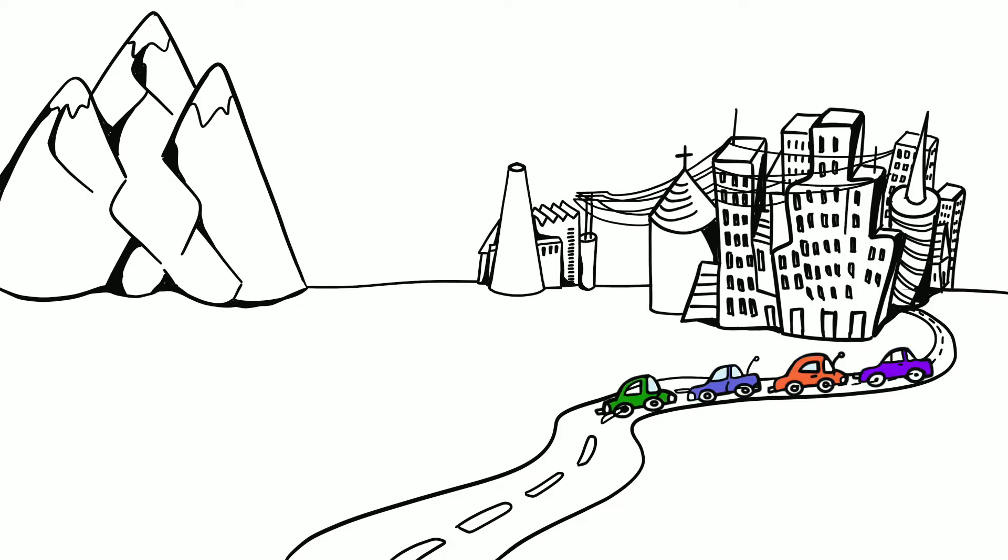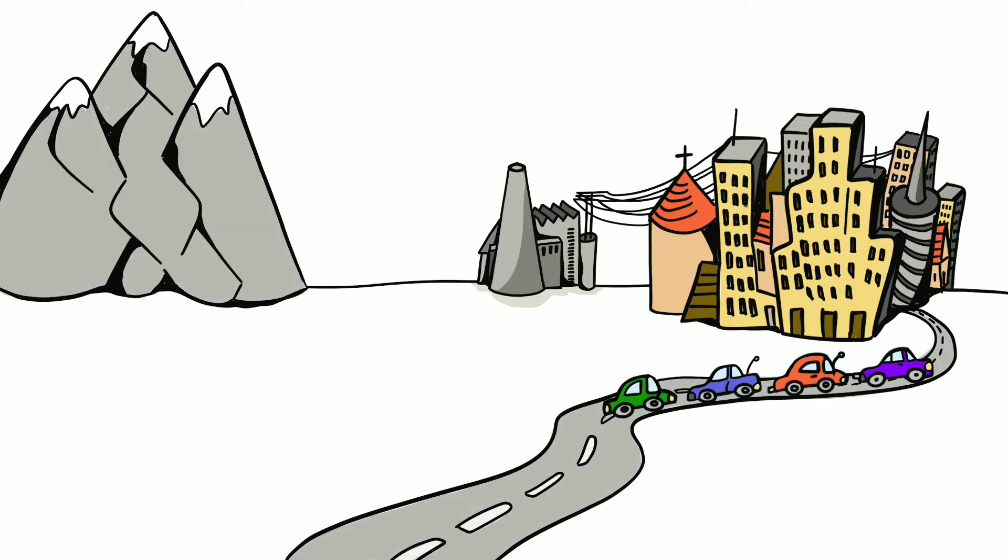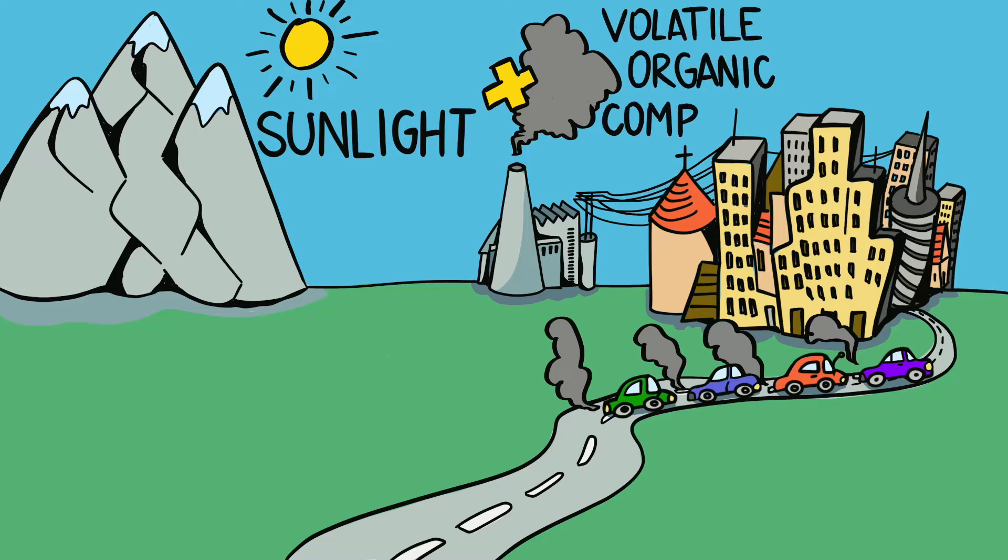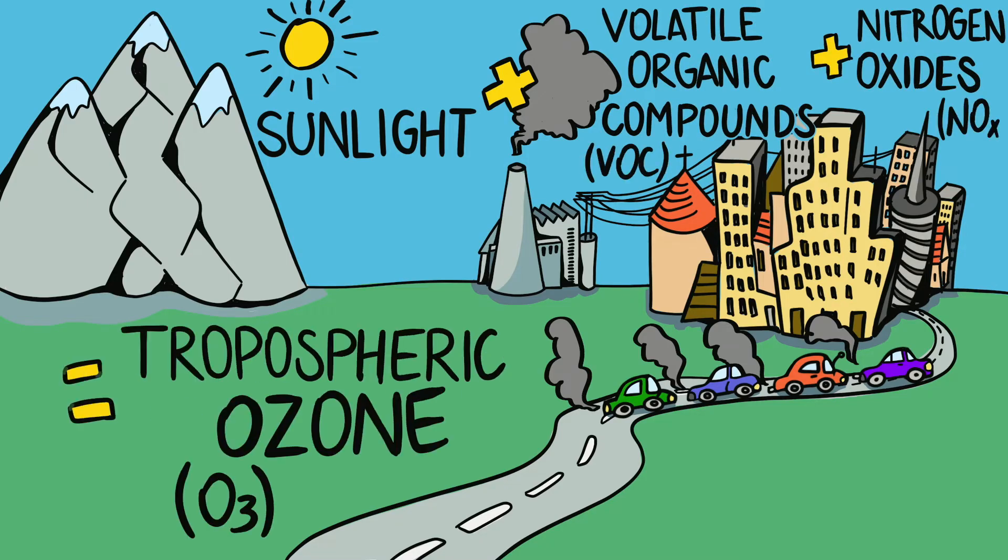Instead, ozone is generated as a secondary pollutant by different human activities. This means that humans generally do not directly release ozone into the air, but the ozone is formed chemically from man-made precursors.